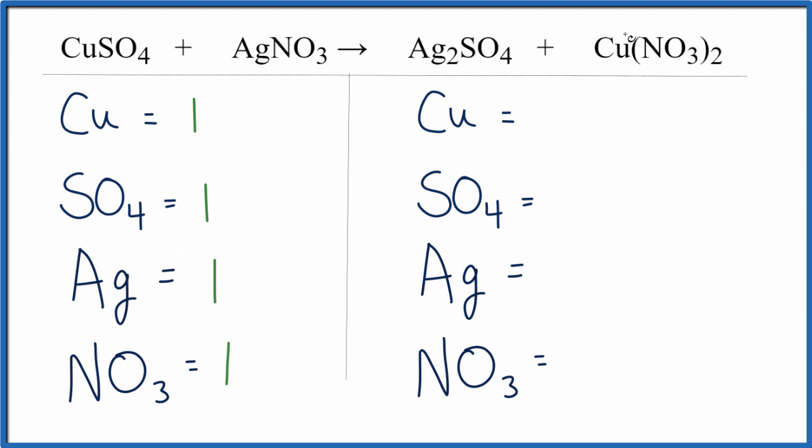Over on the product side, I have 1 copper, I have 1 sulfate, and then I have these 2 silvers. And then for the NO3, I have 2 times the 1 NO3. So I have 2 of the nitrate ions, the NO3 ions.